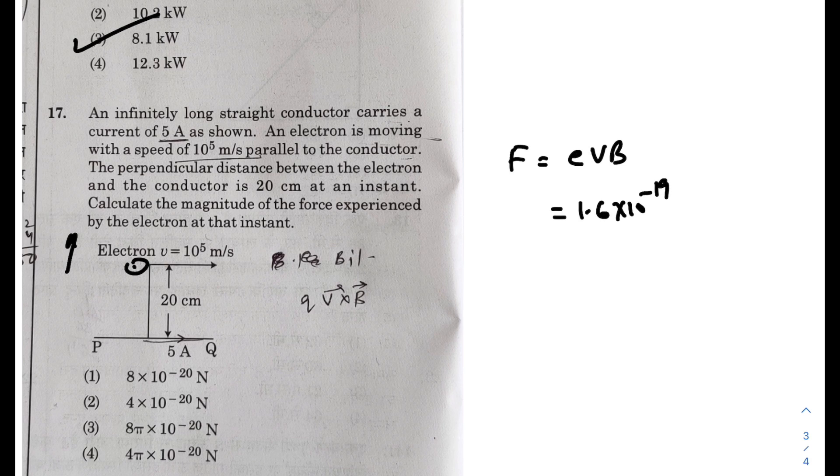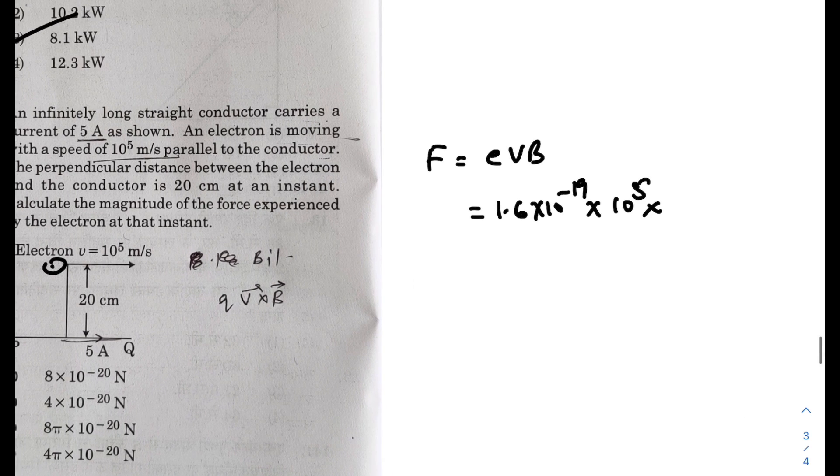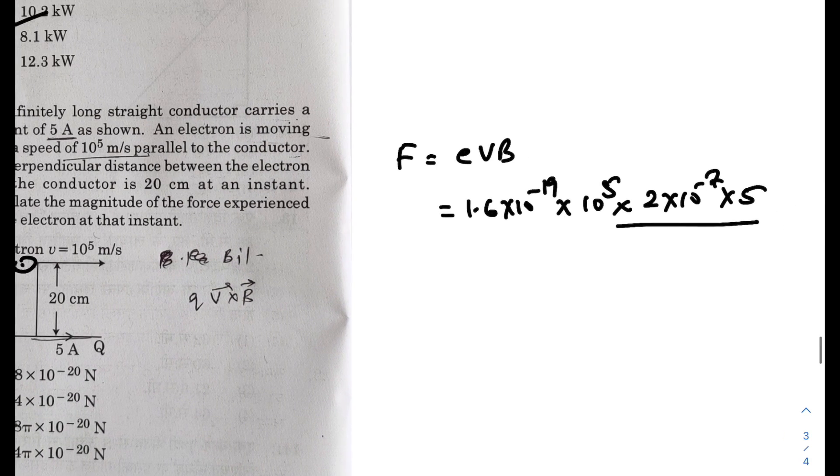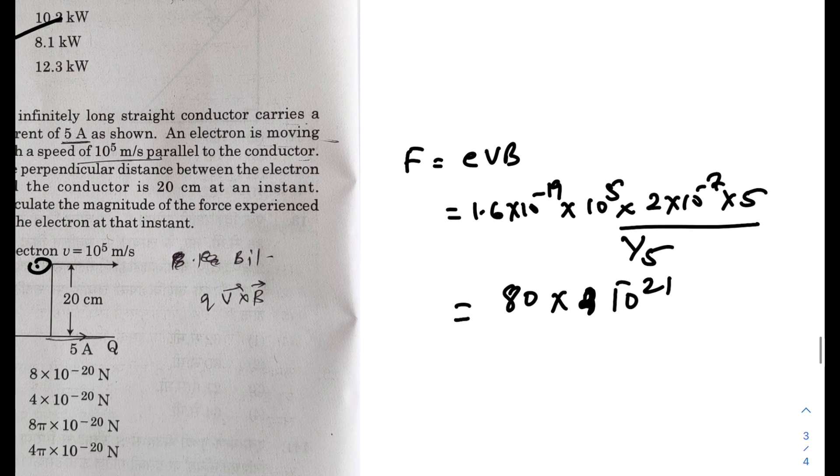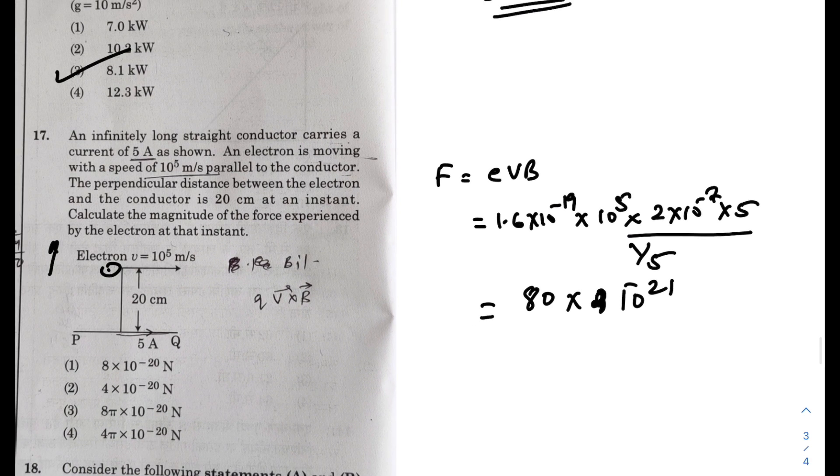So 1.6 into 10 to the power minus 19, V is 10 to the power 5, and B - because it is infinite wire - mu naught I by 2πR. Mu naught by 2π is 2 into 10 to the power minus 7, I is 5, and the distance is 20 cm, so you can write it as 1 by 5 meter. So that is 50 into 1.6, that is 80, and this would be 10 to the power minus 21. So 8 into 10 to the power minus 20 Newton, that is option 1.